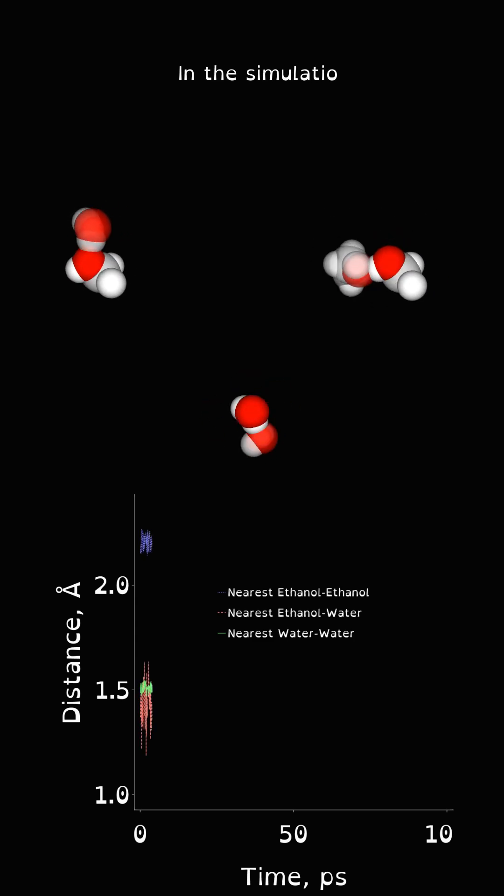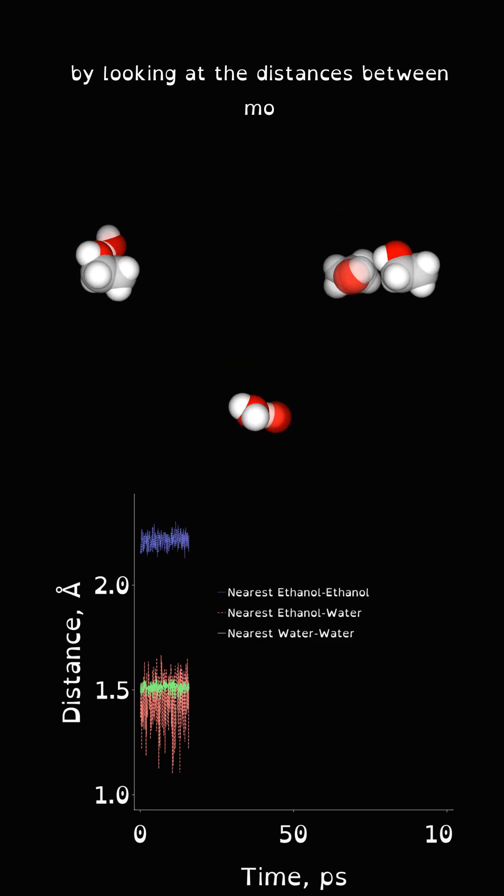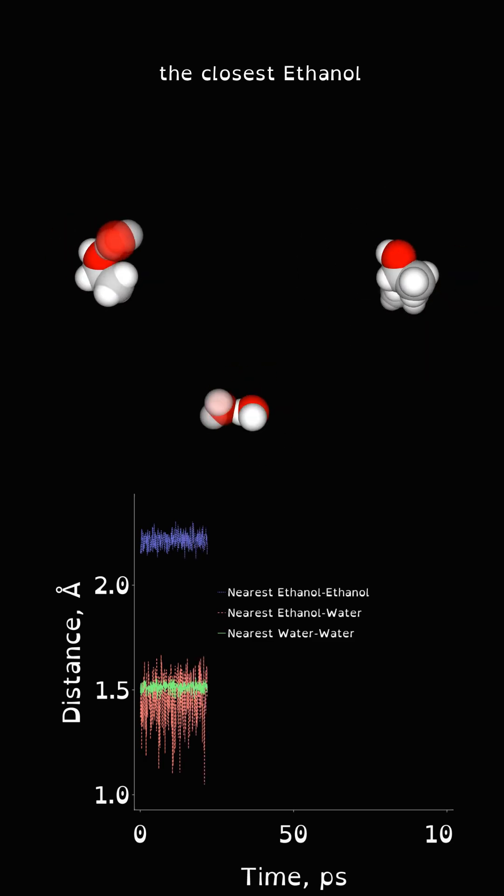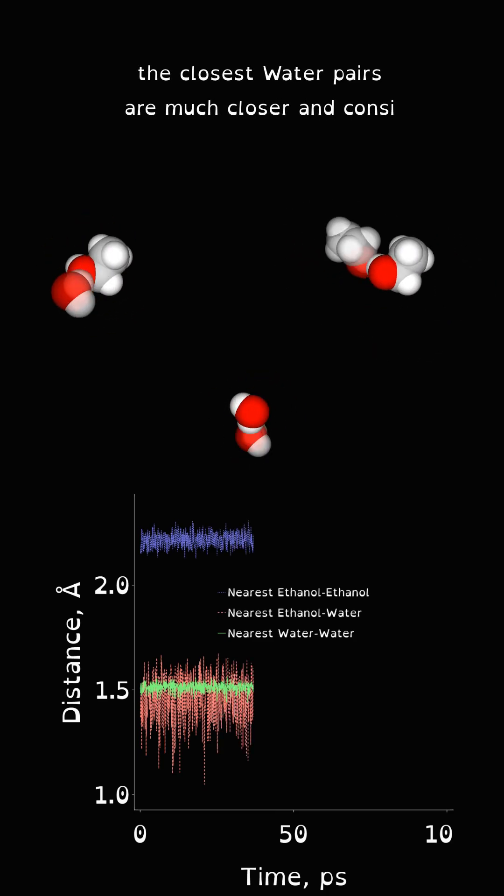In the simulation we can see this happening by looking at the distances between molecules. The closest ethanol pairs are quite far apart. The closest water pairs are much closer and consistent.